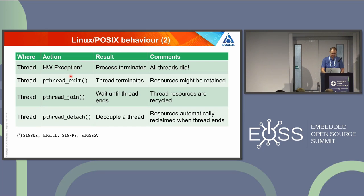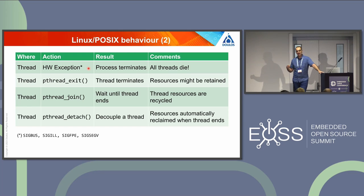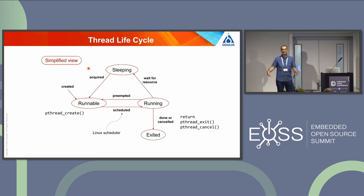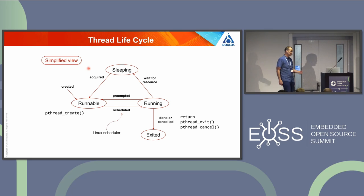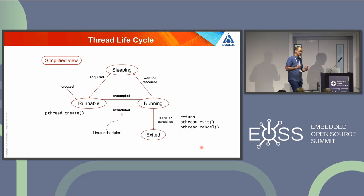There is one aspect dear to me from a safety-critical perspective: what happens if a thread causes a hardware exception — a segfault? Will only that thread terminate or the whole process? Here, all threads will die, and that's okay — it has an impact only on how to do error recovery. Thread lifecycle, because of the one-to-one mapping between the system thread and the kernel task, follows exactly the same lifecycle as any process on Linux. From a programmer's point of view, you can adopt a simple version with only four states: runnable, running, sleeping, and exited. That's enough to reason about your program and to debug it.